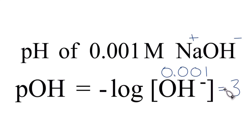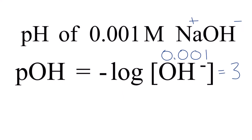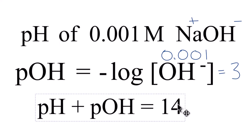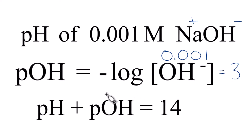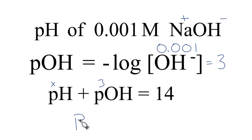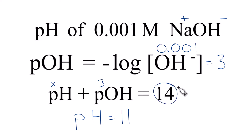Now we can figure the pH out. We use this formula: pH plus pOH equals 14. We know the pOH is 3, so something plus 3 equals 14. That means 11 plus 3 equals 14, so the pH equals 11. And that makes sense because this is a base — it should be greater than 7. If you add 11 and 3 together, you get 14.